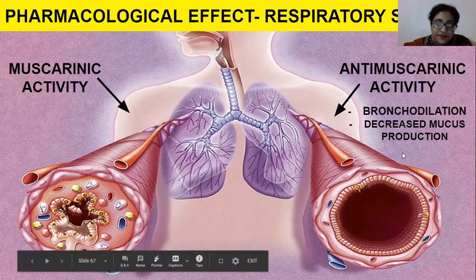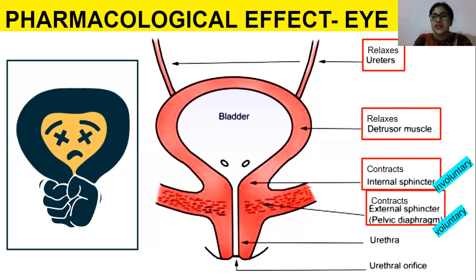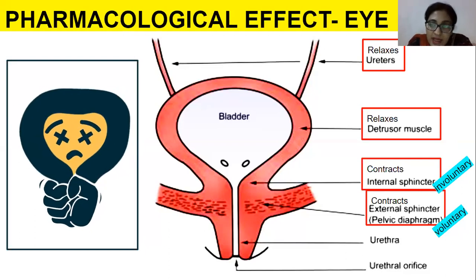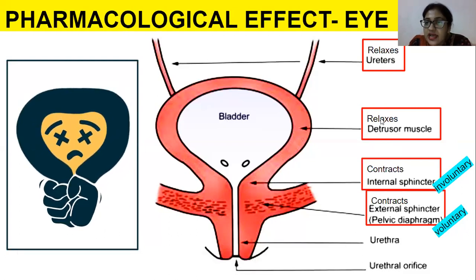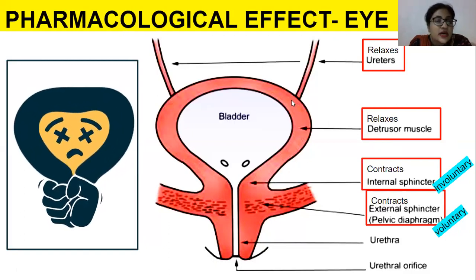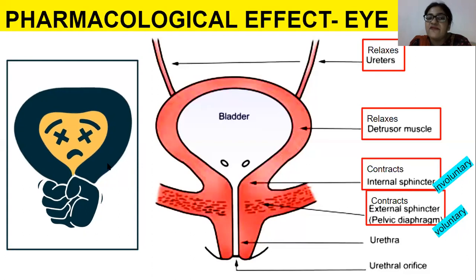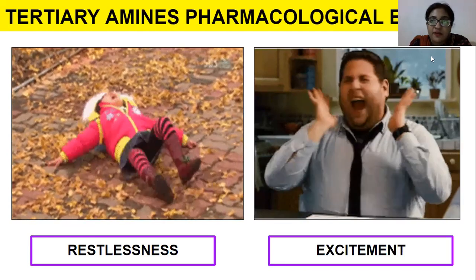For the urinary system: with muscarinic drugs, urine is passed unintentionally. With anti-muscarinic drugs, the ureter relaxes, the detrusor muscle of the bladder relaxes, but the sphincters contract, causing the person to have trouble passing urine.